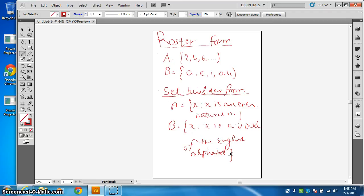In roster form we list the elements; if any element is repeating we do not repeat it in the set. Suppose two appears twice or four appears twice, we write it only one time. In set builder form we write the property of the elements. For set A, if we say X is an even natural number, then it will give you the same numbers: 2, 4, 6, and so on.